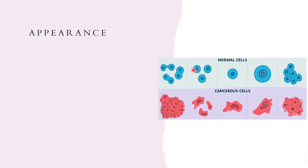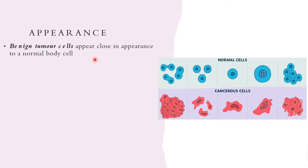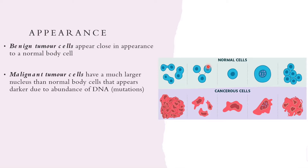Comparing the appearances of benign and malignant tumors: benign tumor cells appear close in appearance to normal body cells. Malignant tumor cells have a much larger nucleus than normal body cells, and it appears darker due to a higher abundance of DNA. If a mutation leads to a malignant tumor cell through addition of DNA, the nucleus will appear darker, and the cell will be misshapen with a larger, darker nucleus.